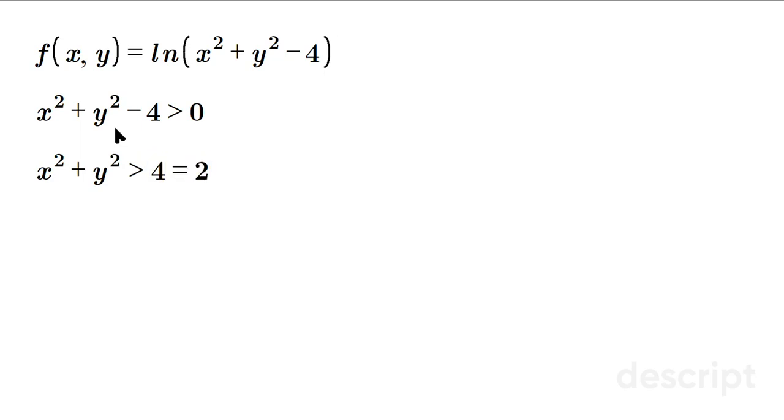Remember, 4 is really 2 squared. In other words, this 2 on the base tells us we have a circle of radius 2. Let's express this in set notation.